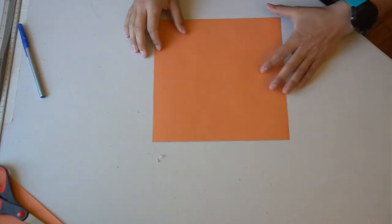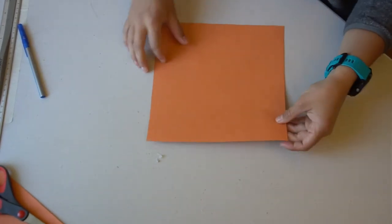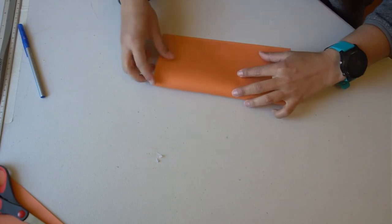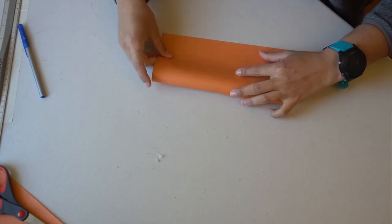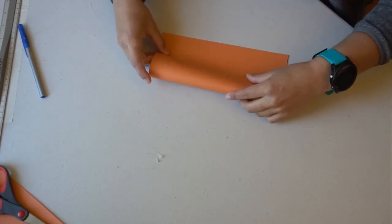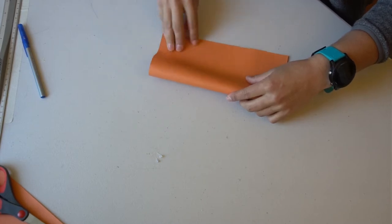Once you have a square piece of paper, fold your paper in half top to bottom and then in half from side to side. This will leave you with a cross of folds in the center of your paper.